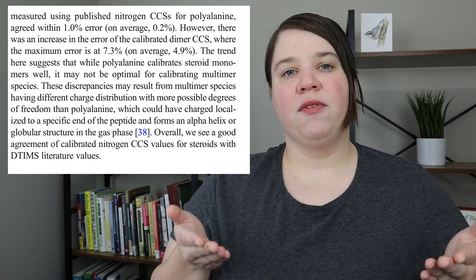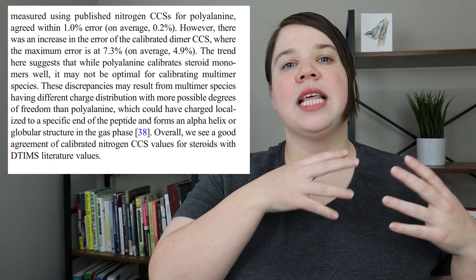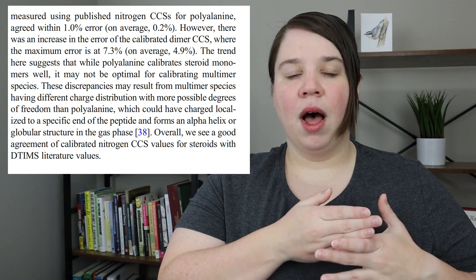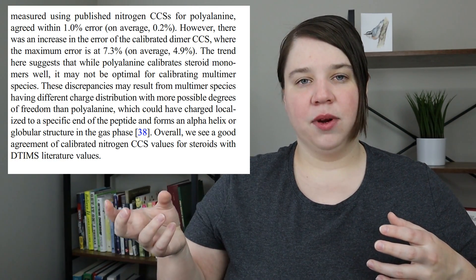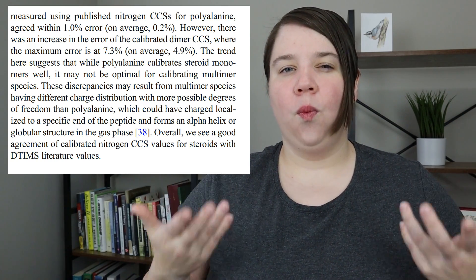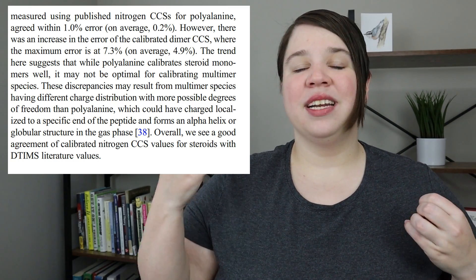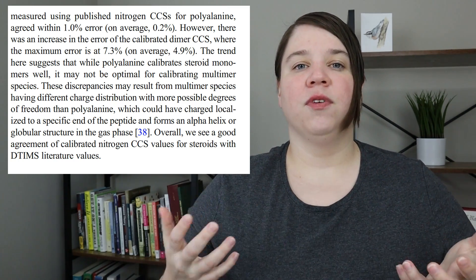In your discussion, you want to take each conclusion from your results and ask yourself two questions. The first is: why? If you have any conclusion you're making, it's very simple to ask why. One of my conclusions in my first research paper was that collision cross sections measured as monomers were more accurate than as dimers. So then I ask, why is that the case? And this is where we start pulling from literature — and maybe we run an additional experiment to try and confirm this.